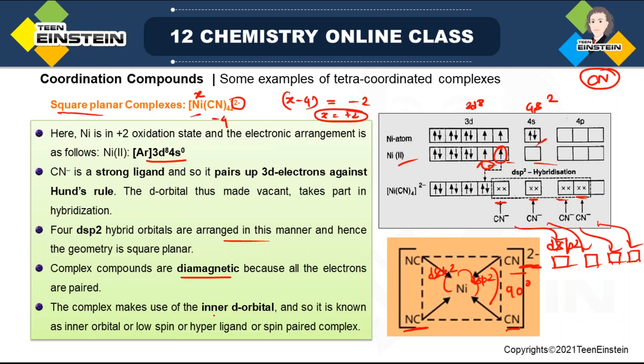To clarify the two nickel examples: nickel tetracarbonyl has nickel in zero oxidation state, while nickel tetracyano has nickel in +2 oxidation state. CN⁻ is an anion (−1 charge), whereas CO is a neutral ligand.